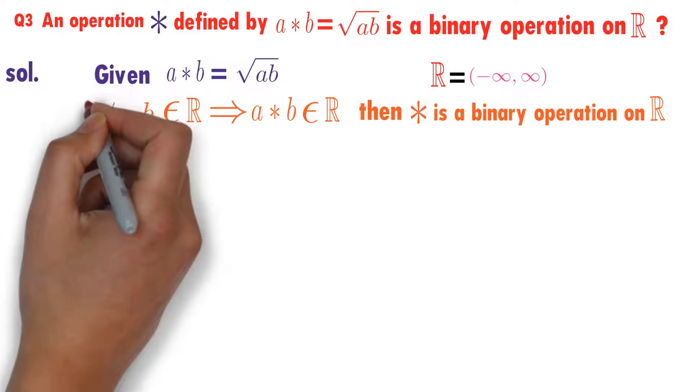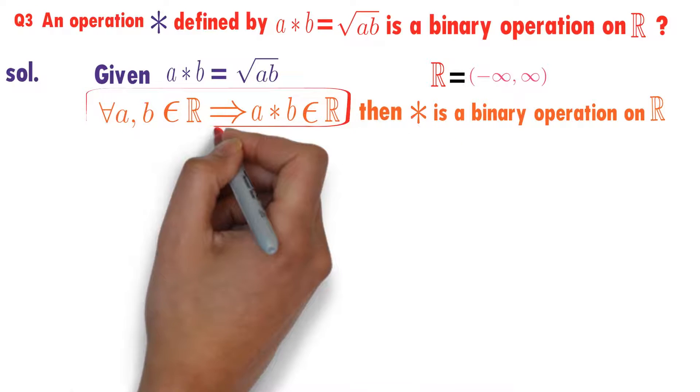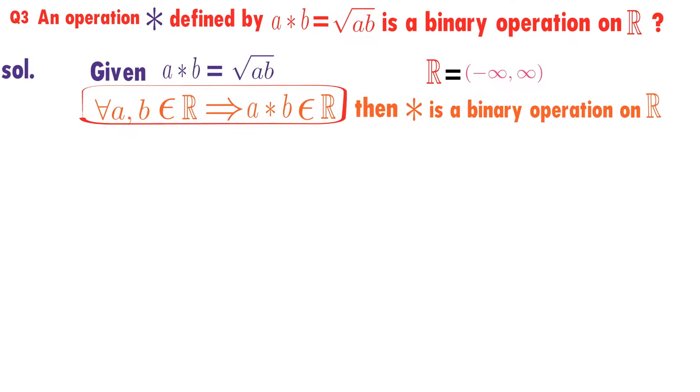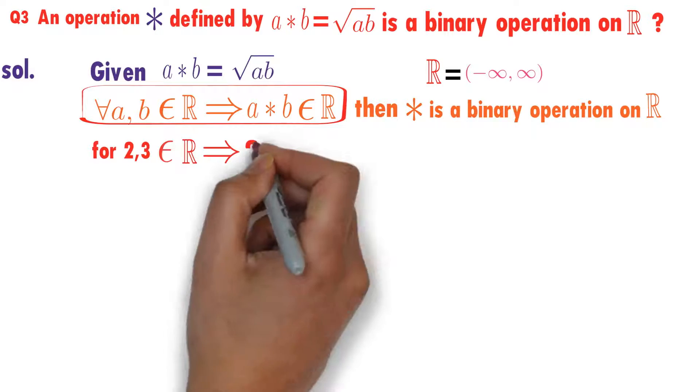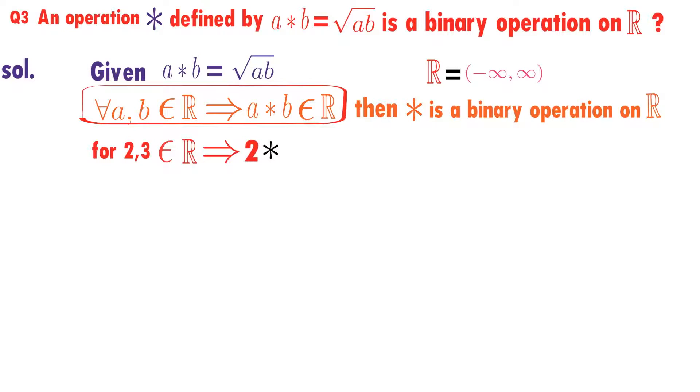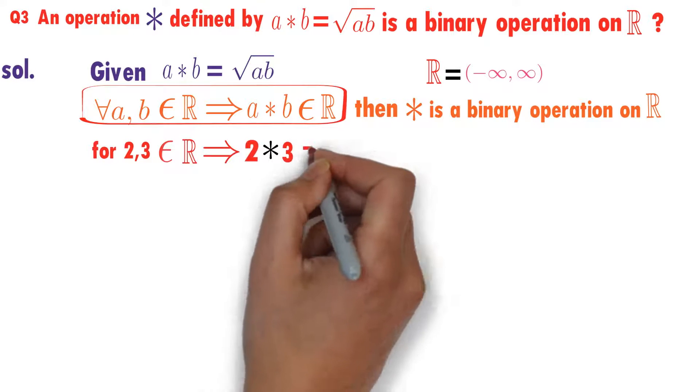Now we need to check this condition. For every a, b belongs to R implies a star b belongs to R. Now I will take two real numbers 2, 3. I will calculate 2 star 3.